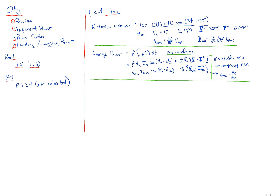In this class, we're going to take the first part and define a new word for it, and similarly take the second part and define a new word for it. The first part we're going to call S, and the second part we're going to call PF. So S is apparent power, and PF is power factor — the two concepts we're learning about today.